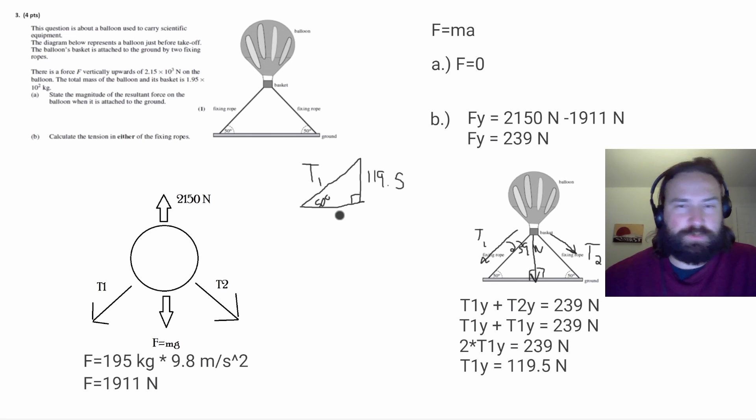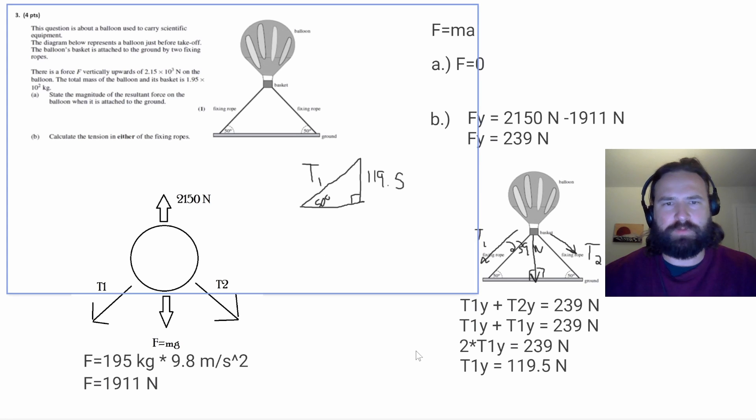Which is cool because we can solve this triangle using trigonometry. Now that we know this force on the opposite side of the 50 degree angle and we're looking for the hypotenuse, we're going to use sine to figure that out. So sine equals opposite over hypotenuse.